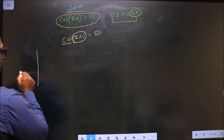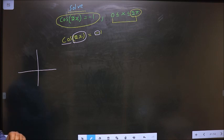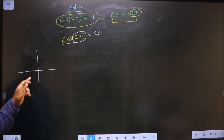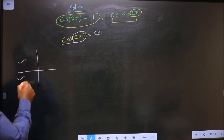So now we should check in what all quadrants is cos negative. It is all, silver, tea, cups. So cos is negative in the second and in the third quadrant.